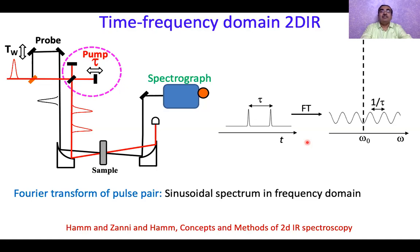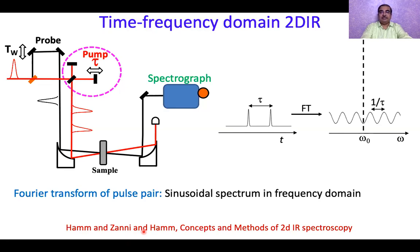Why would you want to do that? If you take a pulse pair with a variable time separation tau, then Fourier transformation of such a pulse pair turns out to be a sinusoidal spectrum in frequency domain. So we have generated a lot of colors at the same time — we do not need the Fabry-Perot filter anymore. We do not have to look at individual pump frequencies one by one. Instead, we generate a whole range of pump frequencies with varying amplitudes. The periodicity — the separation between two peaks — turns out to be 1/tau. The book 'Concepts and Methods of 2D IR Spectroscopy' by Zanni and Hamm is considered the textbook for people who want to study 2D IR. Please study this book if you want to know more about these techniques.